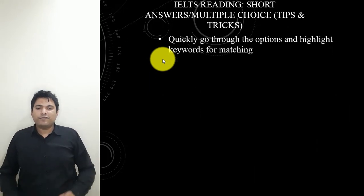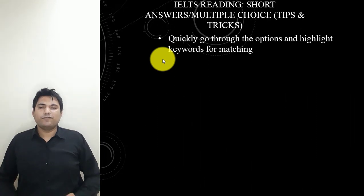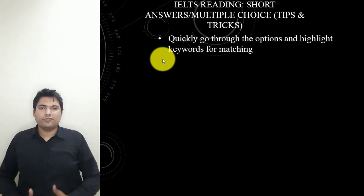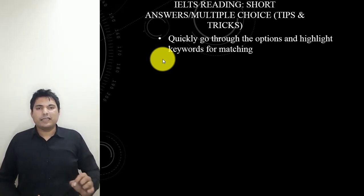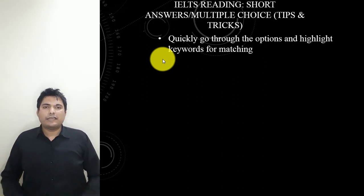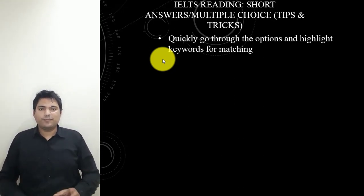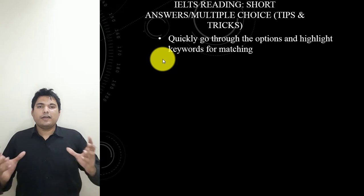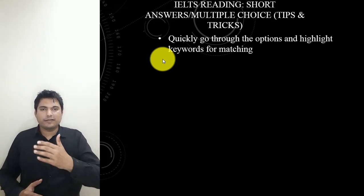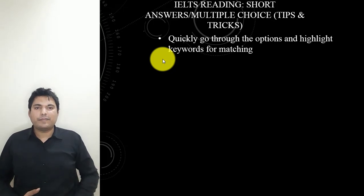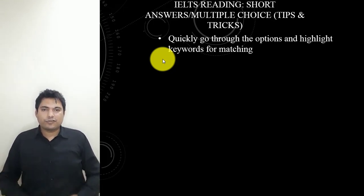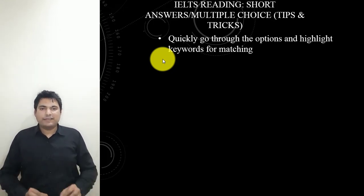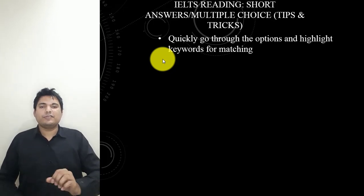The first tip is that you have to quickly go through the options and highlight the keywords for matching. You don't read the passage first — look at the options first and highlight the keywords. The keywords should not be a noun or the title of the paragraph. They should be specific and different, not very common information used in every line or paragraph. They should be a verb or an object, not a noun. When we solve the examples, I will show you which words should not be used as keywords.